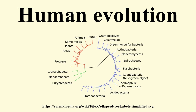Within the hominoidea superfamily, the hominidae family diverged from the hylobatidae family some 15 to 20 million years ago. African great apes diverged from orangutans about 14 million years ago, the hominidae tribe parted from the gorillini tribe about 8 million years ago, and in turn the sub-tribes hominidae and paninae separated about 7.5 million years ago. The basic adaptation of the hominin line is bipedalism.